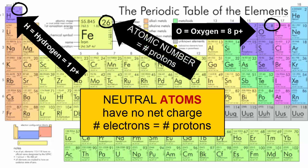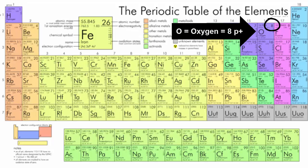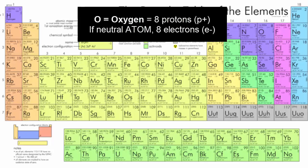These numbers, also known as atomic numbers, are the most important identifier of atoms. Any atom with eight protons must be oxygen. And if it's neutral oxygen, it will also have eight electrons.